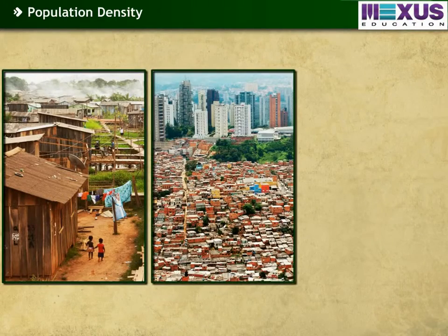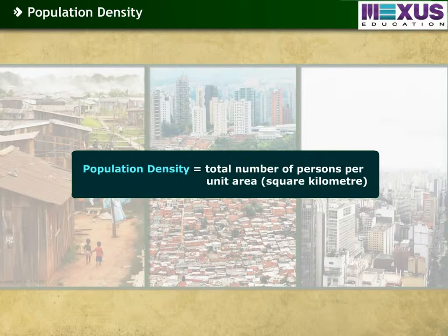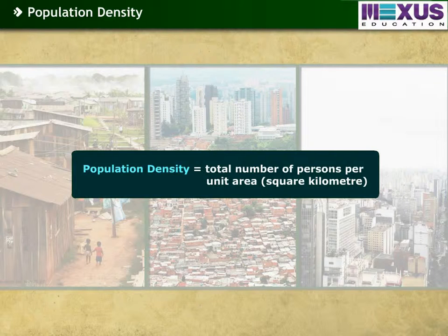Population density provides a better understanding of the distribution of population in a given region or area. Population density is calculated as the total number of persons per unit area, providing the number of people per square kilometer.